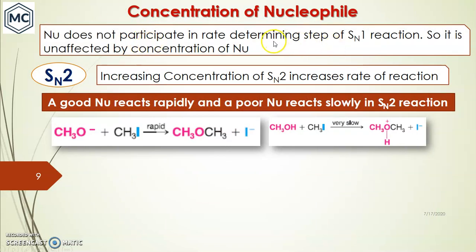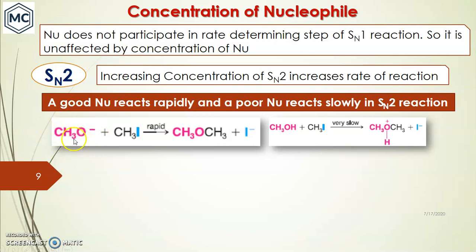The second factor is concentration of nucleophile. The nucleophile does not participate in the rate-determining step of SN1 because it is unimolecular, so SN1 is unaffected by nucleophile concentration. In SN2, the nucleophile plays a direct role because it is bimolecular — increasing nucleophile concentration increases the reaction rate. A good nucleophile reacts rapidly and a poor nucleophile reacts slowly.